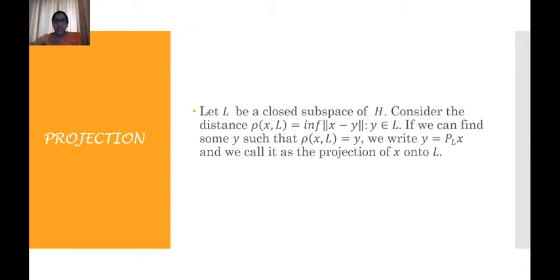Let L be any closed subspace of the Hilbert space H. Consider the distance ρ(x, L), which is nothing but the infimum of ‖x − y‖ where y belongs to L. That is the distance between the point x and the space L. If we can find some y such that ρ(x, L) is attained at y, then we write y = P_L(x) and call it the projection of x onto L.